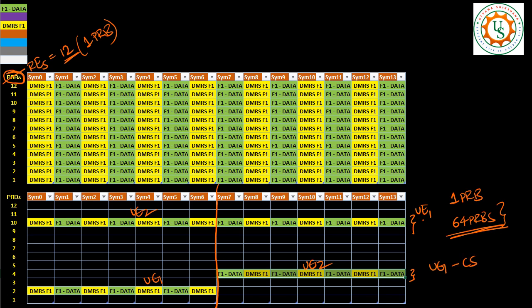Let's say cyclic shift number 1. For UE number 2, we can use cyclic shift number 2. Then, let's say these two are orthogonal. Then, what we can say, we can multiplex UE number 1 plus UE number 2. So on the same time frequency resources, we can multiplex both of them and we can transmit. So like that, how many UEs can be multiplexed?